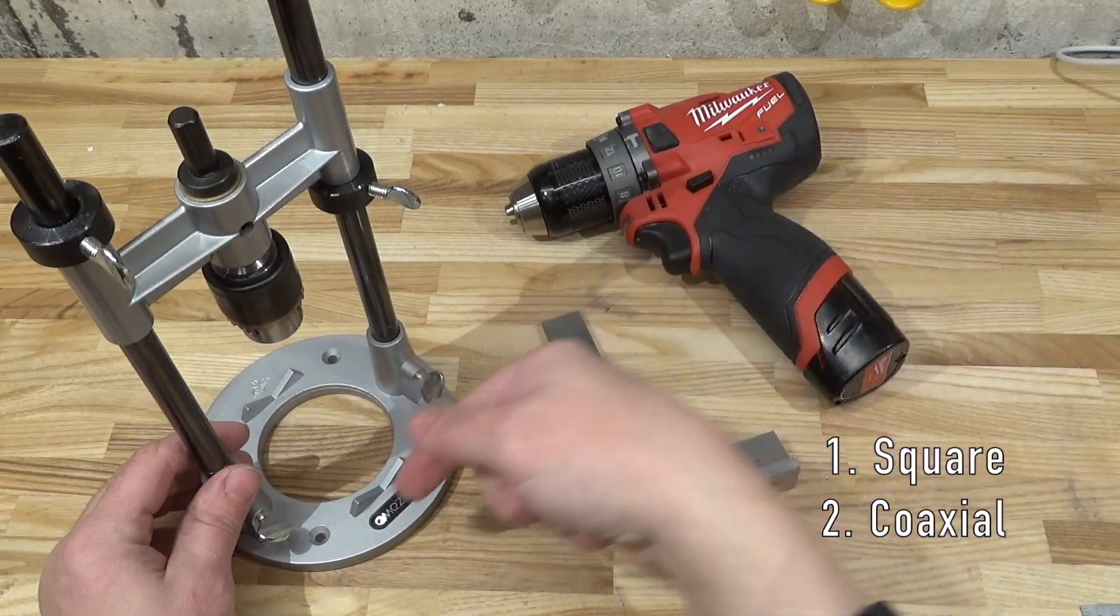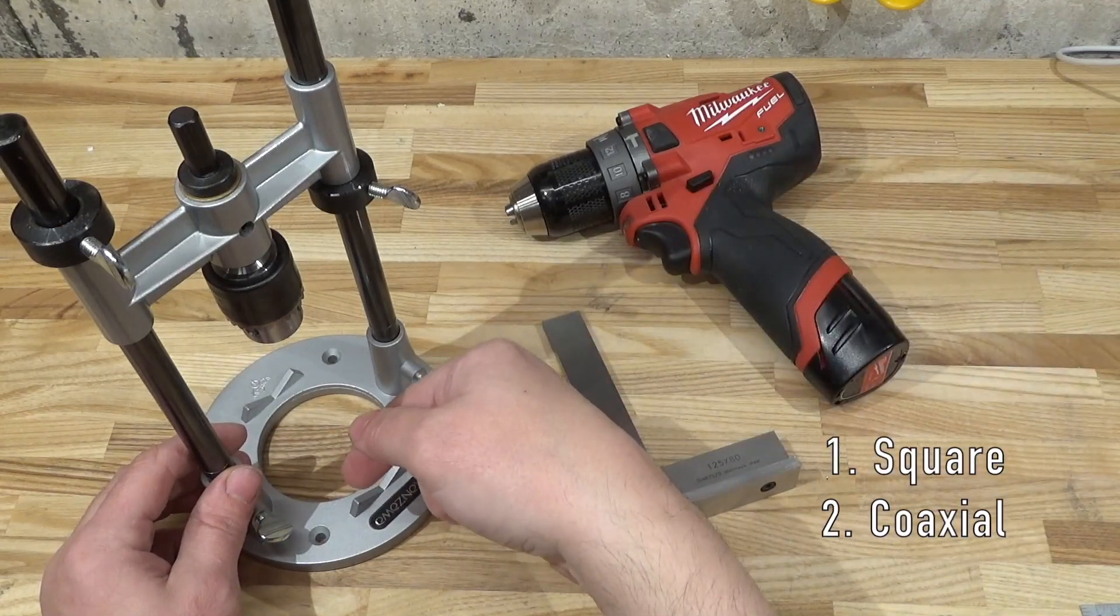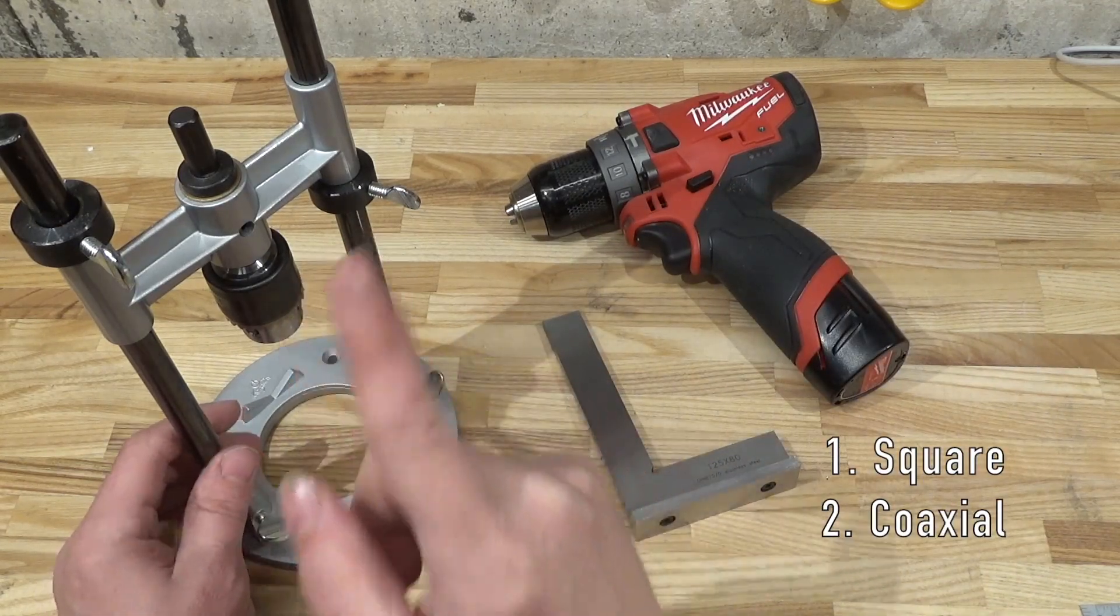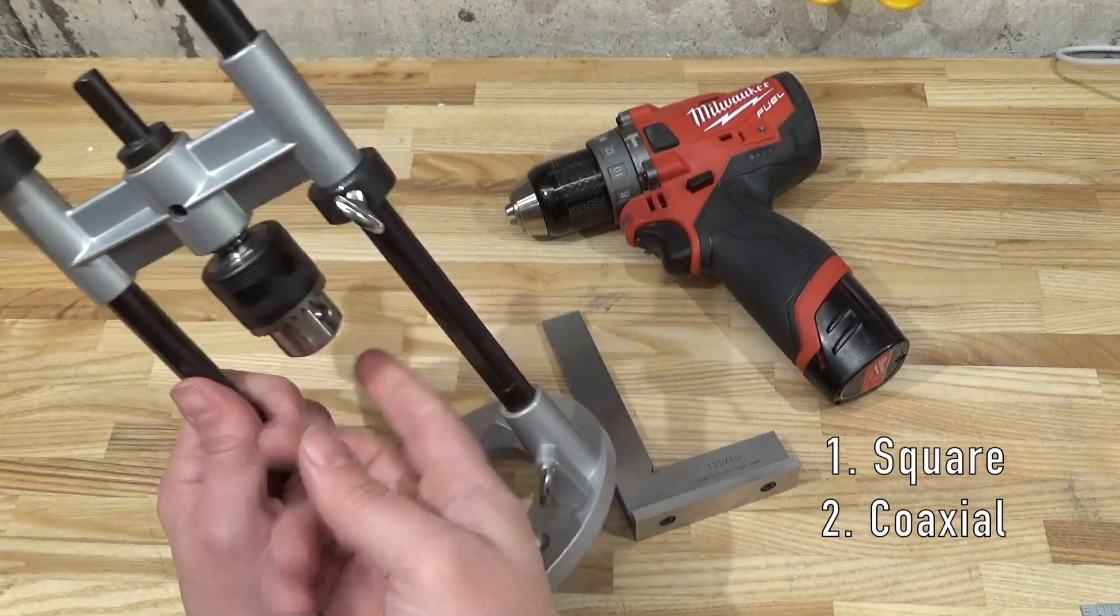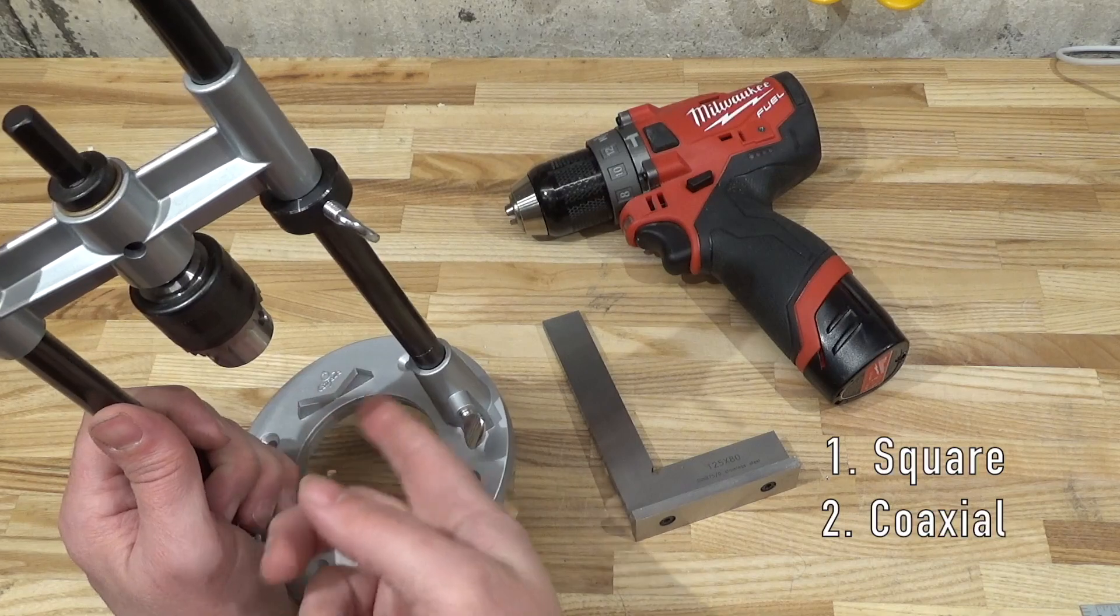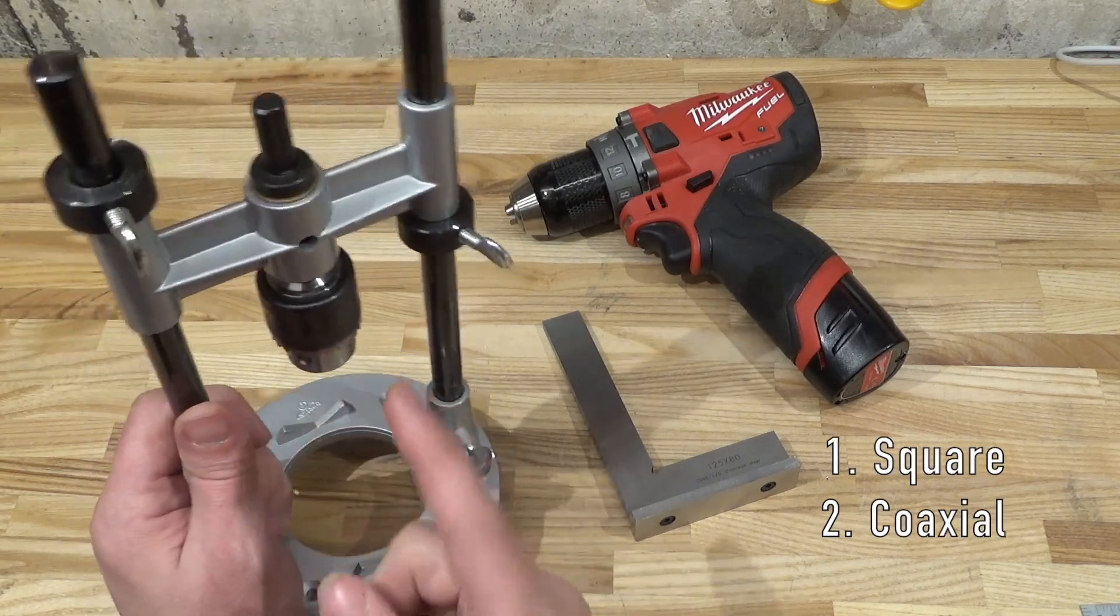Coaxiality is of great importance, and different bits are going to have different propensities to walk or not walk. For wood, it shouldn't be an issue as long as you're using the proper bit.